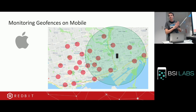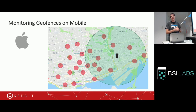There's a question from the stream: can geofences have any shape, or just a circle? That depends — it can have any shape. But the way we used it at Redbit, the circle shape worked better for us. It depends on the purpose of your application.